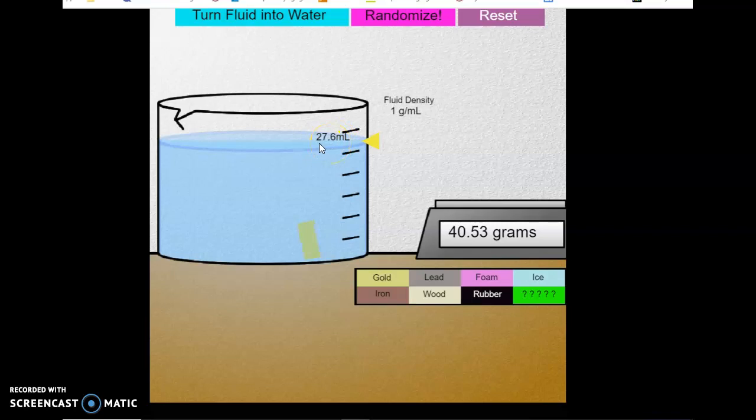Now I want you to record this volume of the entire tank with the gold block. Record it in table one where it says sample block plus initial volume of water. That is going to be 27.6 milliliters. So earlier it was 25.5 and now it is 27.6. The difference between these two, 27.6 minus 25.5, would be the volume of this block.